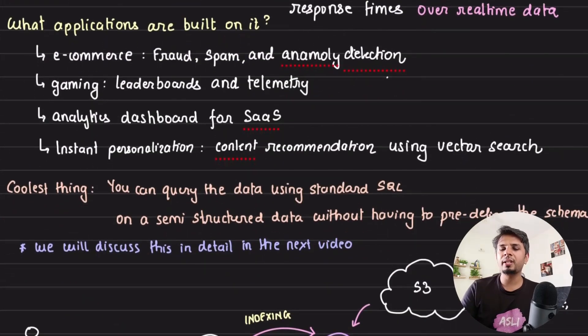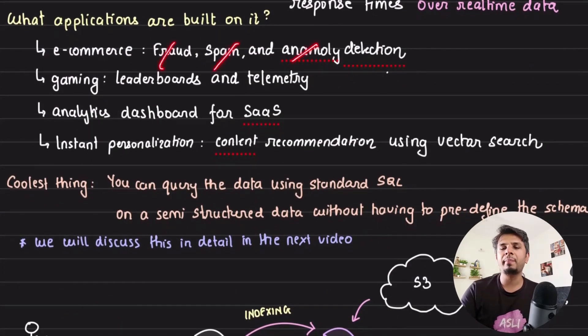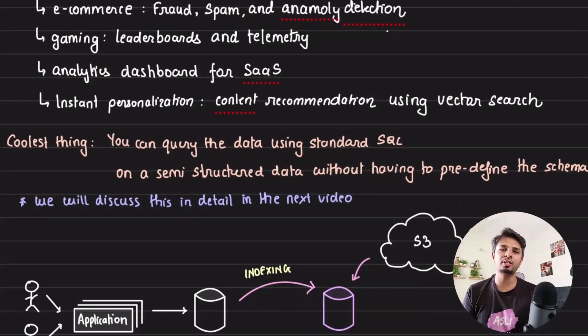here are a few places where Rockset fits in really well. In e-commerce, you can use Rockset to power fraud, spam, and anomaly detection. In gaming, you can build real-time leaderboards. You can use Rockset to build analytics dashboards for SaaS applications, and if you're content heavy, you can use Rockset's vector search to power instant personalization.